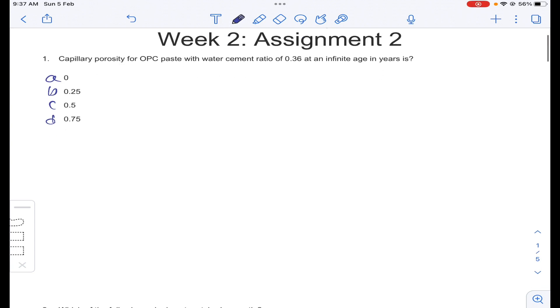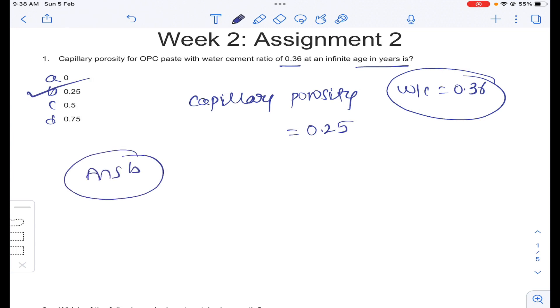The first question is capillary porosity for OPC ordinary Portland cement paste with water cement ratio 0.36 at infinite age in years is. You need to remember capillary porosity when water cement ratio is equal to 0.36 is 0.25. Answer B for question number 1.